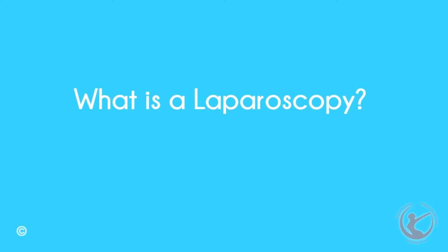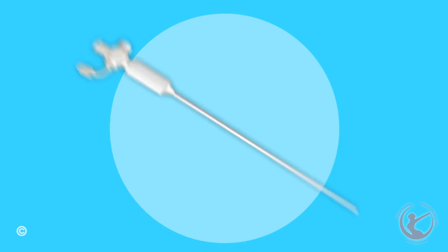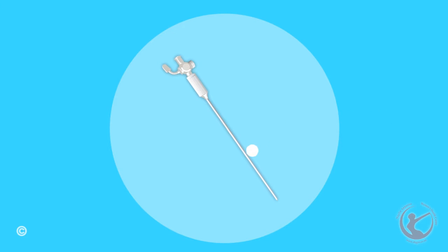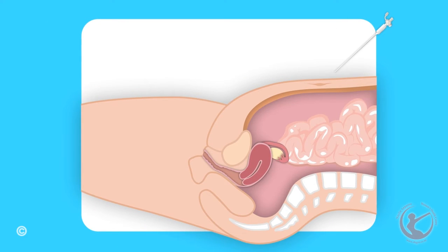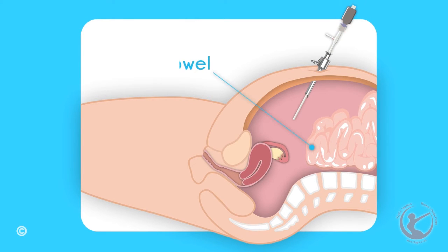Just what is a laparoscopy? A laparoscopy is an examination of your abdomen using a telescope. This is done under a general anaesthetic. There are two ways of inserting the telescope. I use an instrument called the Varies needle. A small incision is made in the belly button and the needle is passed through into the abdomen. Air is then passed through this needle into the abdomen. Once there is sufficient air in the abdomen, an instrument is passed into the abdomen and the telescope passed through this. The air in the abdomen compresses the bowel and allows me to see things easily.